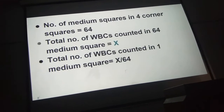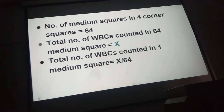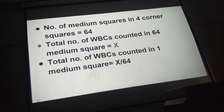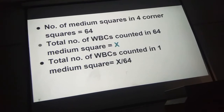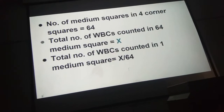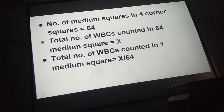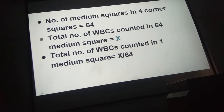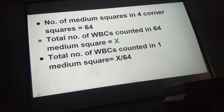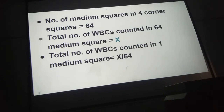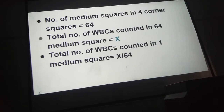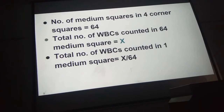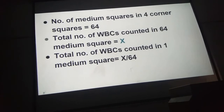We know that the number of medium squares in the 4 corner squares is 64. We have counted the WBCs in those 4 corner squares and assign that value as x — the total number of WBCs counted in 64 medium squares is x. The number of WBCs counted in 1 medium square will then be x/64.